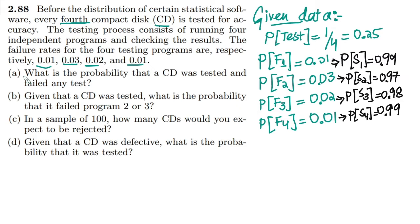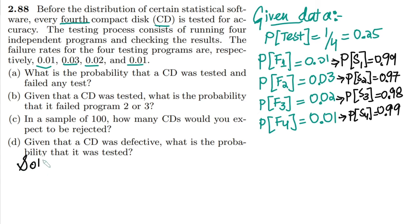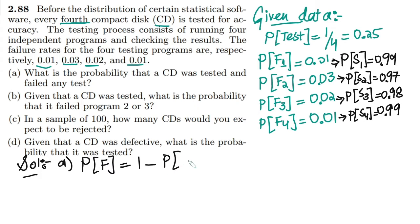Now, what do we have to find? We have to find the probability that a CD was tested and failed any test. This is part A of our question. The probability of failure in any test equals 1 minus the probability of success in all tests — we use the complement. Since all program tests are independent of each other, we can apply the multiplication rule.